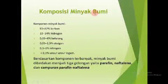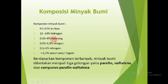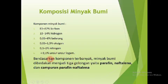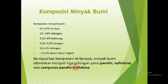Komposisi minyak bumi: 83 hingga 87 persen terdiri atas karbon, 10 hingga 14 persen terdiri atas hidrogen, 0,05 hingga 6 persen adalah belerang, 0,05 hingga 1,5 persen oksigen, 0,1 hingga 2 persen nitrogen, dan kurang dari 0,1 persen unsur-unsur logam. Berdasarkan komponen terbanyak, minyak bumi dibedakan menjadi tiga golongan yaitu parafin, naftalena, dan campuran parafin-naftalena.